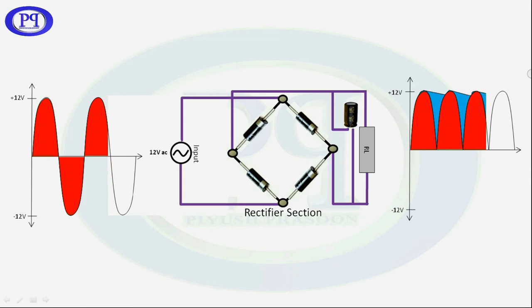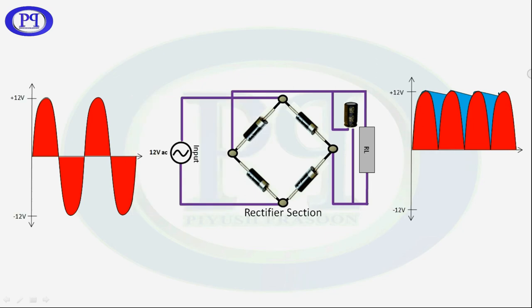So in simple language, I can say that here we are using the capacitor to fill the signal gap between two peaks of pulsated DC signal. So after using filter, we can see the signal got stabilized up to some extent.